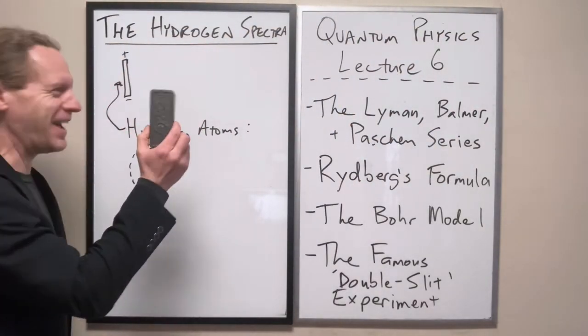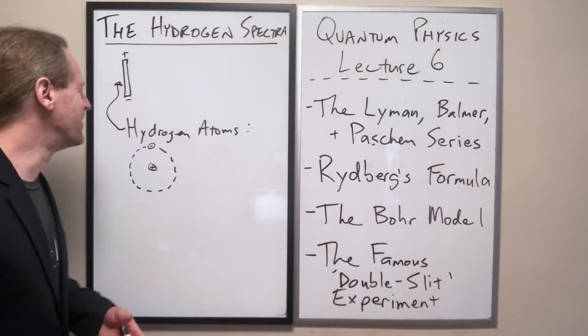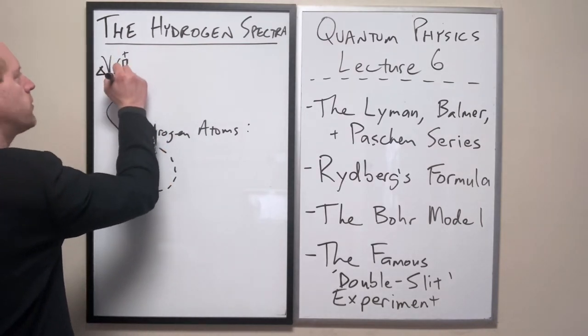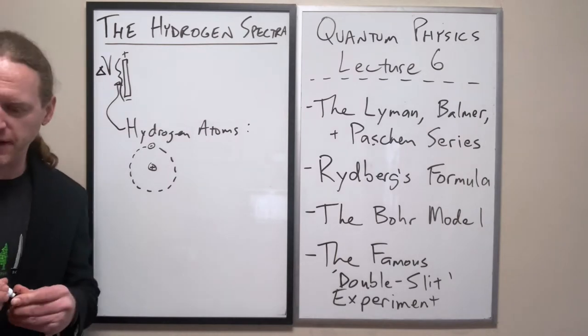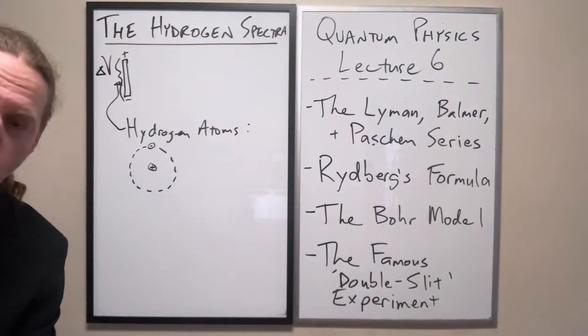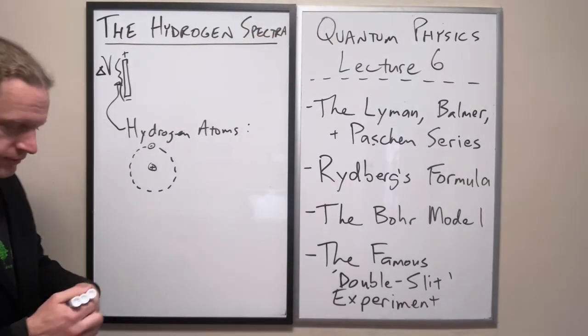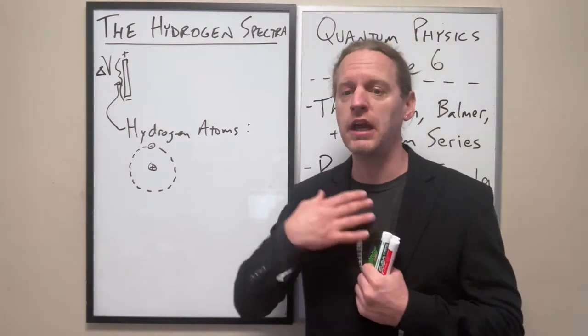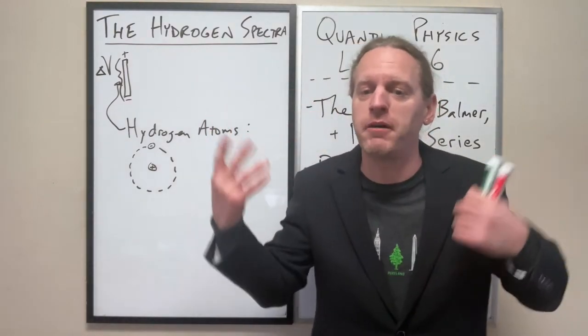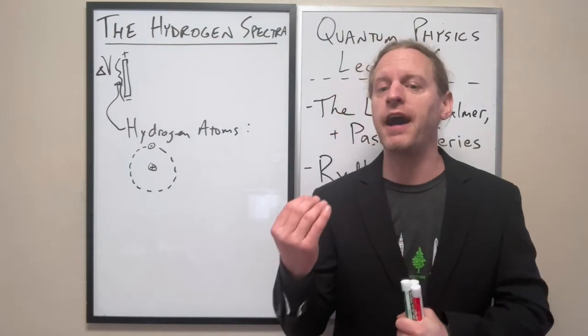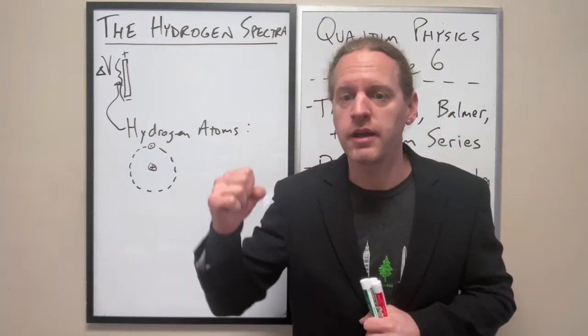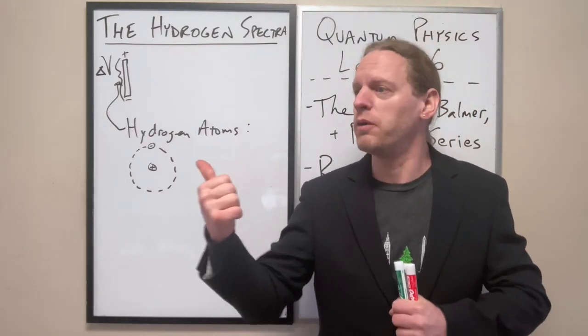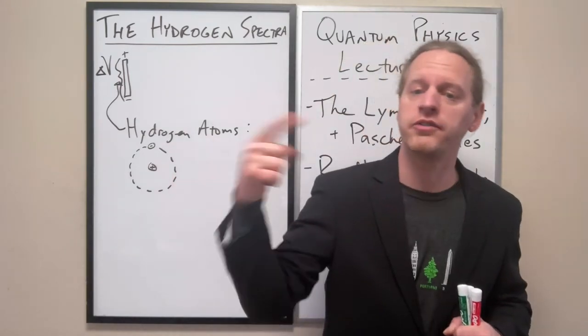This hydrogen atom, when you apply a voltage difference, delta V across this tube, what we observe is that very specific wavelengths of light begin shooting out of this. And as we now understand because of the photoelectric effect, we now understand that whenever you see a wavelength of light, it is in fact a single particle of light carrying a very specific energy.